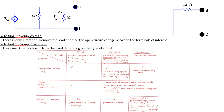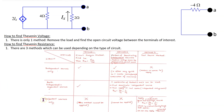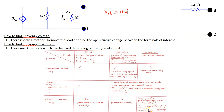Finally, let's consider the case when the circuit contains dependent sources only. When the circuit contains dependent sources only, by definition V Thevenin is 0 volts and the only task is to find R Thevenin. For this, the test source method can be used: we connect a test voltage source or a test current source between the terminals of interest, and by finding the ratio of VT to IT we can find R Thevenin.